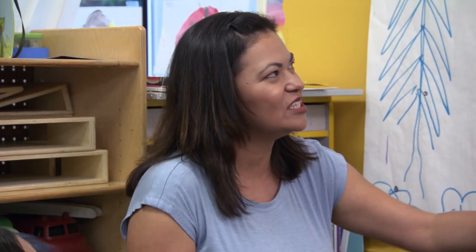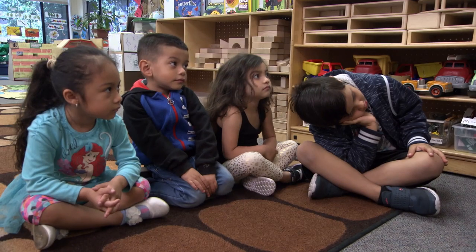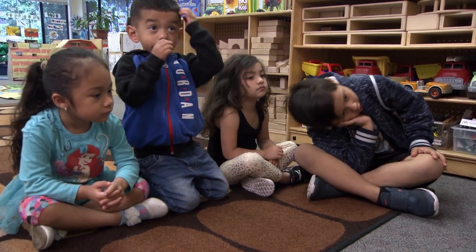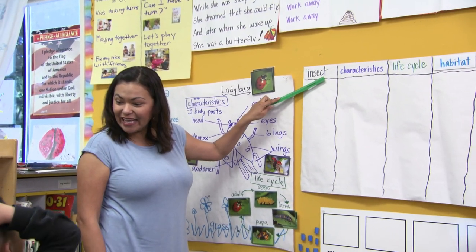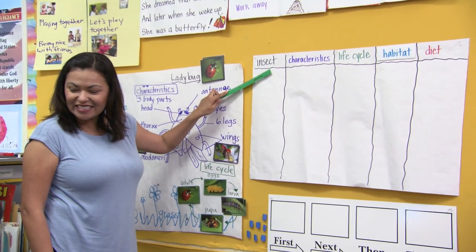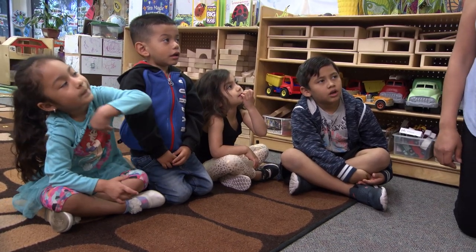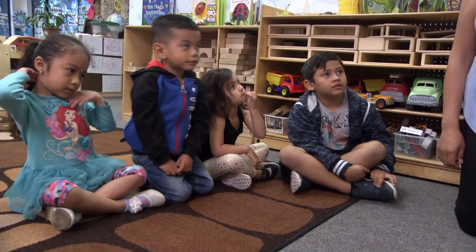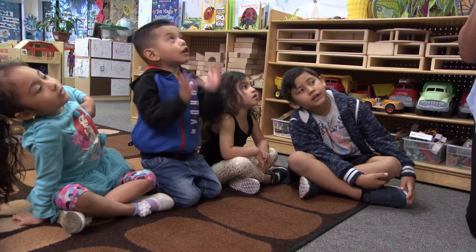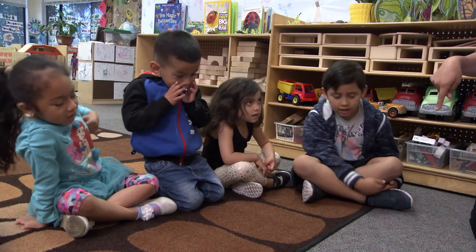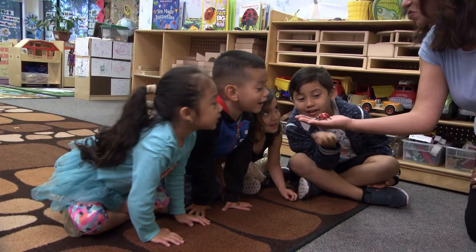Look at what I have right next to this. This is a graphic organizer — a tool that's going to help our brains process the information one more time. At the top here it says 'insect.' Say that with me: insect. This is a long word with so many letters. It says 'characteristics.' Can we say that together? Characteristics. Let's say it to the ceiling — characteristics. Let's say it to the floor — characteristics. Let's say it to the ladybug — characteristics.